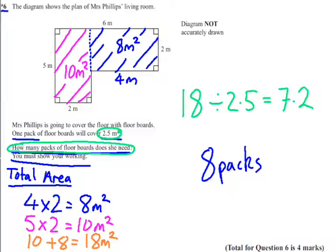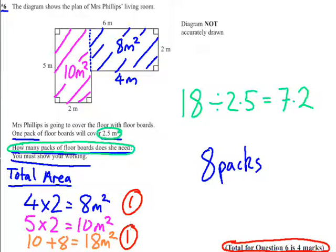Question 6 is a 4 mark question. You get one mark for attempting to work out one of those areas and another mark for successfully working out the compound area. You get one mark for trying to find out how many packs she's going to need and one mark for 8 packs.